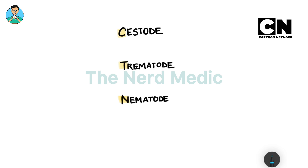The drug of choice for all these classes: for cestodes and trematodes we use praziquantel for both C and T, whereas in case of nematodes we go for albendazole.